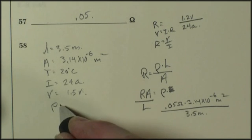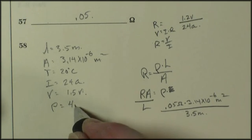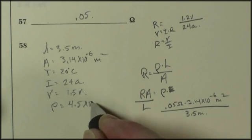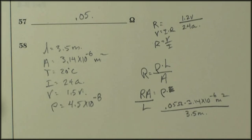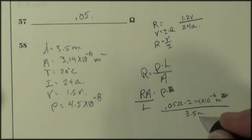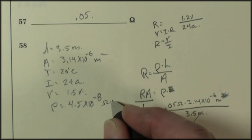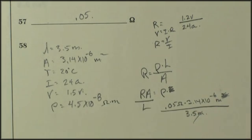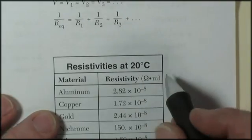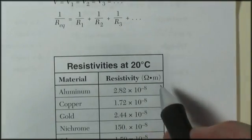And I'm getting a resistivity of 4.5 times 10 to the negative 8. And let's see. Ohm meters. Ohm meters. And when I go look on resistivity, ohm meters is the appropriate unit.